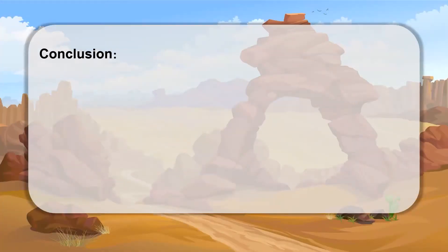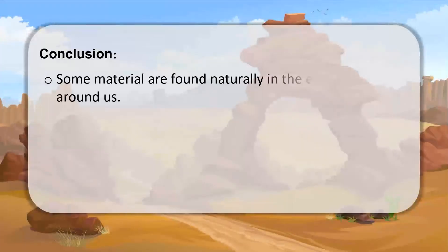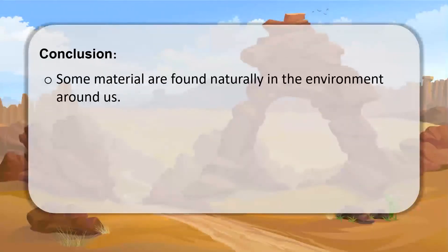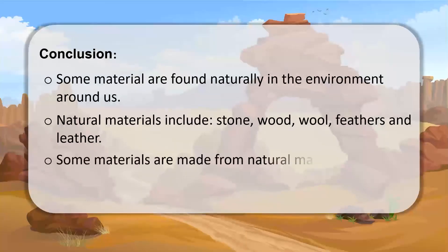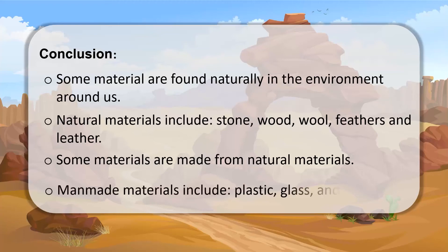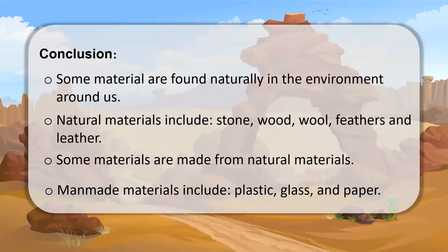Great job, kids! Let's go over what we learned today. Some materials are found naturally in the environment around us, and natural materials include stone, wood, wool, feathers, and leather. We also learned that some materials are made from natural materials, and man-made materials include plastic, glass, and paper.